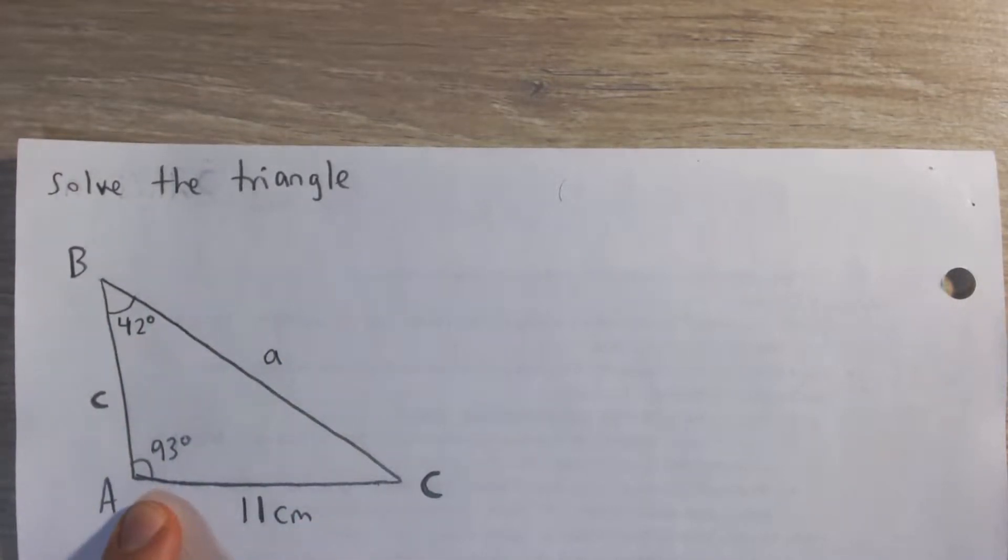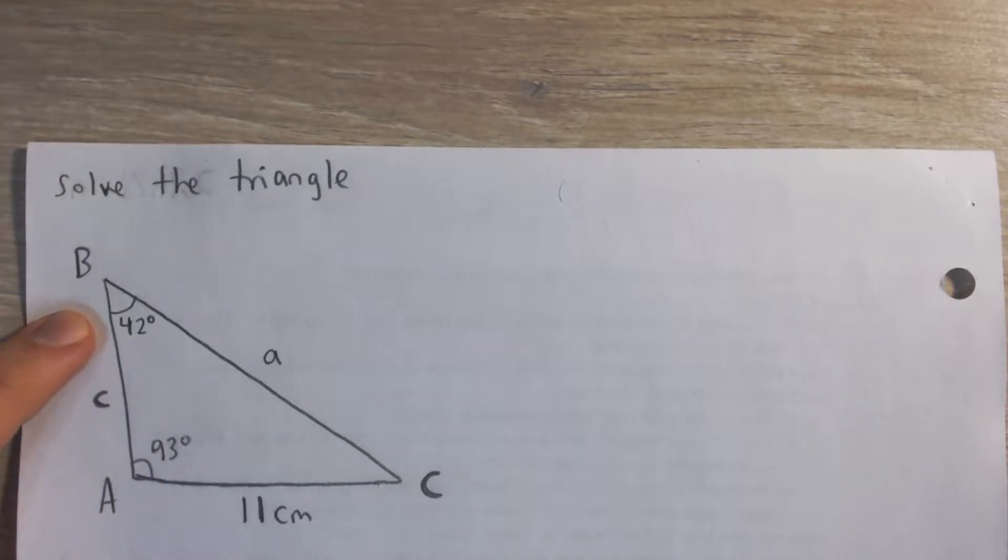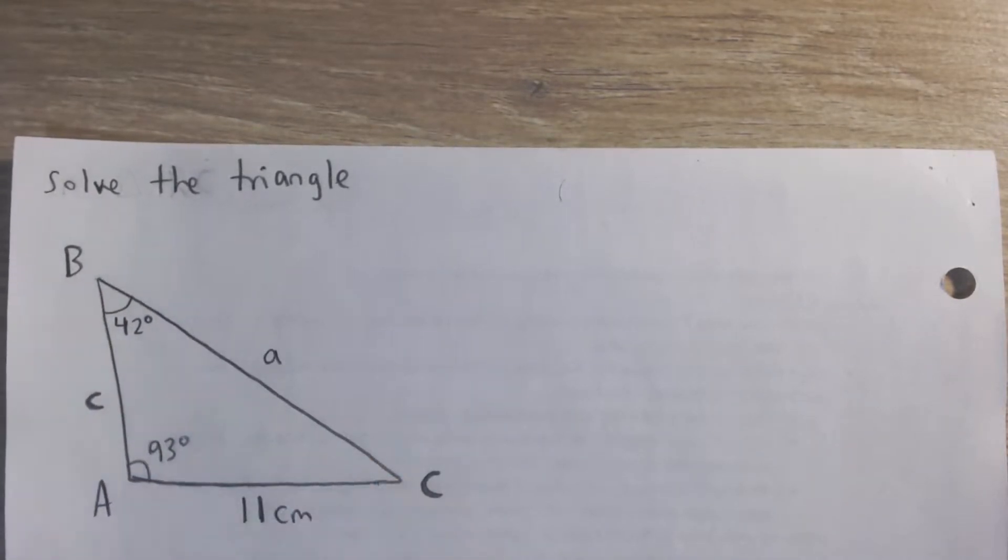We're given that angle A is 93 degrees, angle B is 42 degrees, and side b is 11 centimeters. So we have to solve the triangle, meaning we have to find the other side lengths and angles.